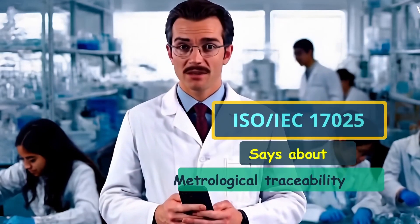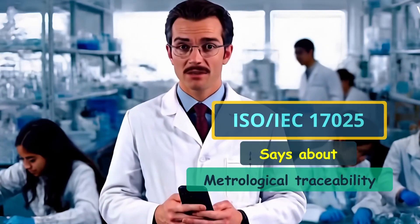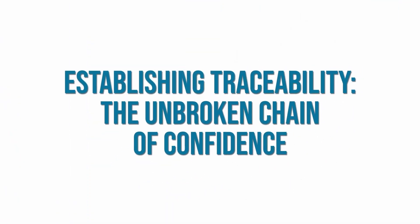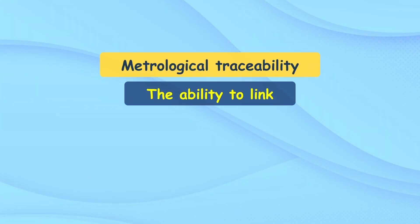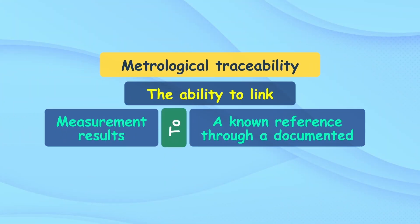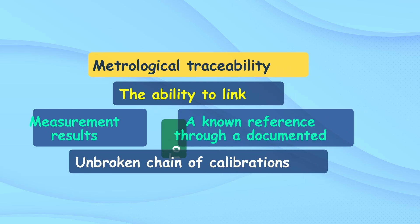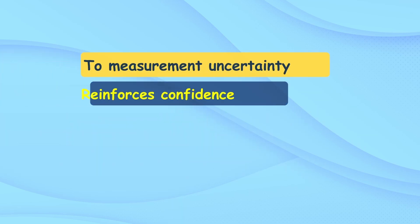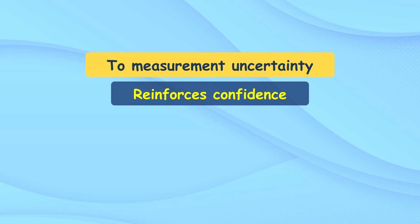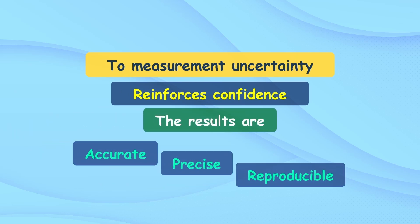Now that you know the traceability pyramid, it is time to understand what ISO/IEC 17025 says about metrological traceability. Metrological traceability refers to the ability to link measurement results to a known reference through a documented, unbroken chain of calibrations. Each step in this chain contributes to measurement uncertainty but also reinforces confidence that the results are accurate, precise, and reproducible.